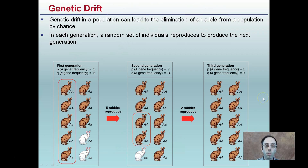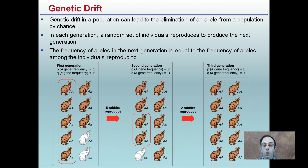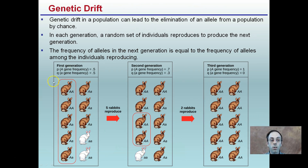Genetic drift in a population can lead to the elimination of an allele by chance. In each generation, a random set of individuals reproduces to produce the next generation, and the frequency of alleles in the next generation equals the frequency among the individuals reproducing. Here we see a population starting with some heterozygotes and some homozygous dominants — the brown ones — and after breeding, we now have all homozygous dominant individuals. This is genetic drift drifting toward a certain genotype.